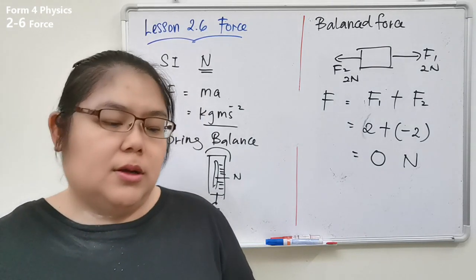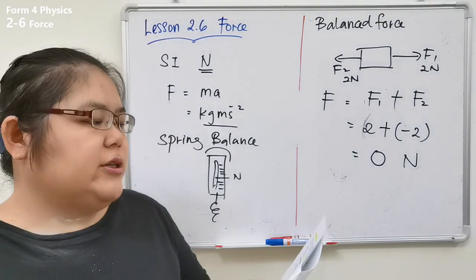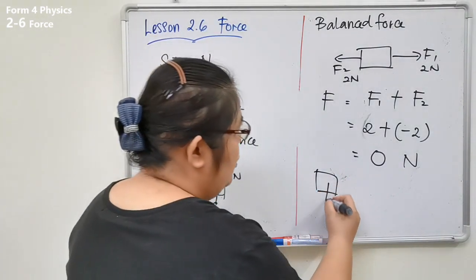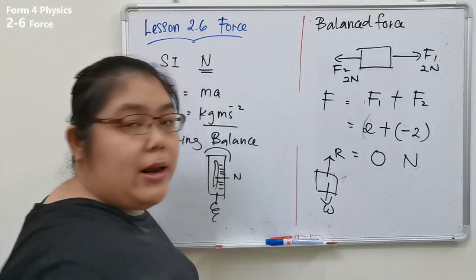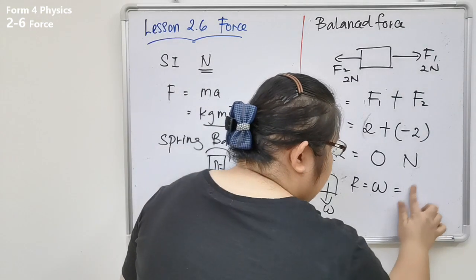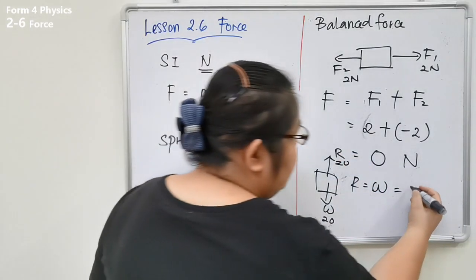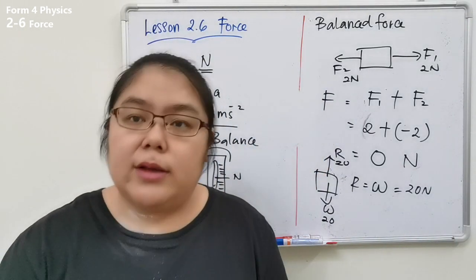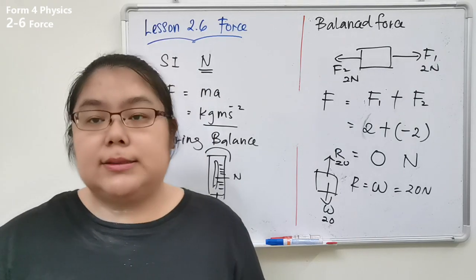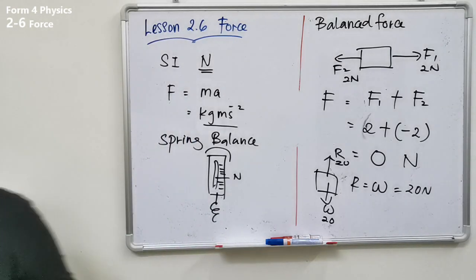There are two situations for balanced force. First: the object is at rest — a box at rest has weight downward and normal reaction upward; these two must be balanced, so R = W. For example, if weight is 20 N, then normal reaction is also 20 N. Second situation: constant velocity. When the question says 'constant velocity,' that means balanced force.